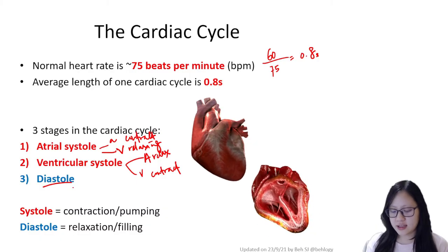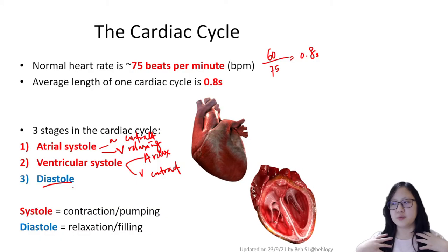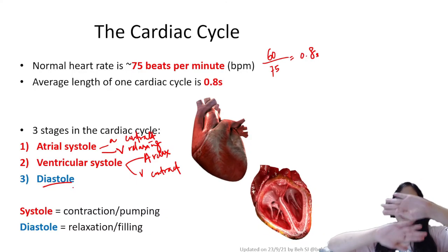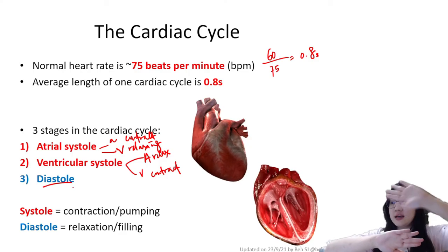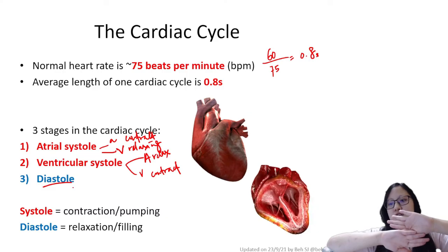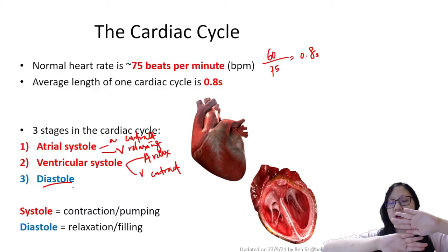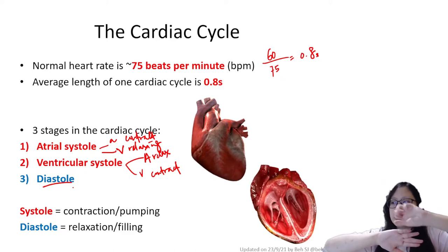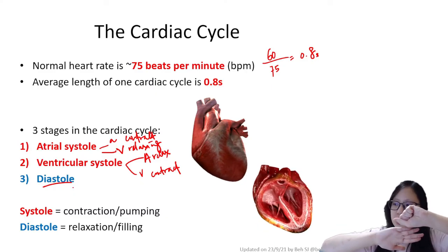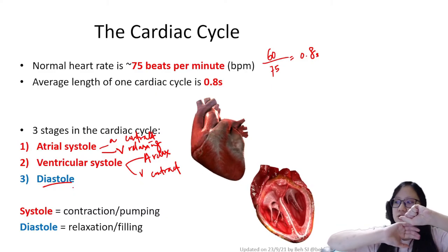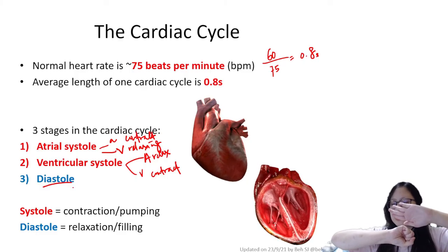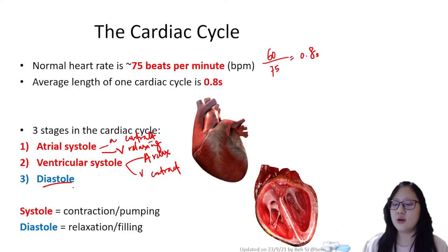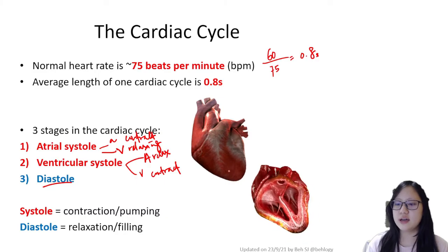A helpful memory aid: hold up both hands in front of you. The top hand represents the atria and the bottom hand represents the ventricles. For atrial systole, squeeze the top hand — atria contracts, ventricles relax. Then the opposite: ventricles contract, atria relaxes. Then both slowly relax together. You can see this motion in the animation as well.